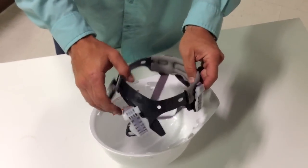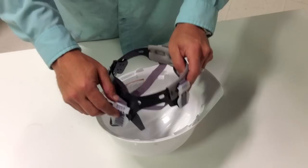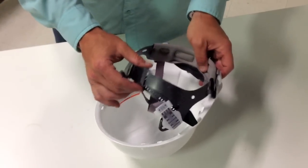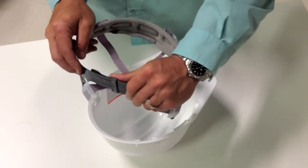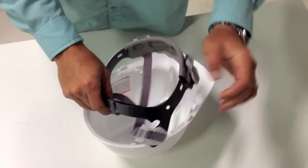Get your brow pad facing forward in the helmet. You always want your suspension adjustment facing towards the rear of the helmet. You're going to adjust suspension from the back of your head.